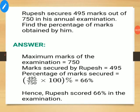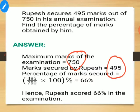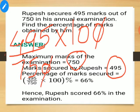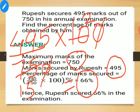Next question: Rupesh secures 495 marks out of 750 in his annual examination. Find the percentage of marks obtained by him. The maximum marks are 750 and marks secured are 495. Write 495 upon 750 multiplied by 100. Cancel zeros by 5 — simplifying gives 495 multiplied by 2 divided by 15 — and you will get 66 percent.